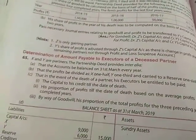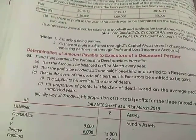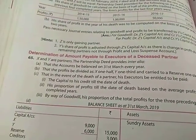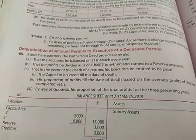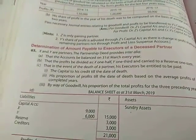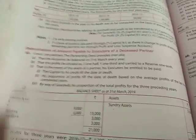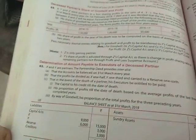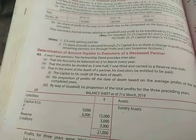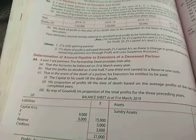In the event of the death of a partner, his executors will be entitled to be paid the capital to his credit till the date of death, his proportion of profits till the date of death based on the average profit of the last 3 completed years, and by way of goodwill his proportion of the total profits for the preceding 3 years.